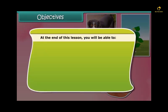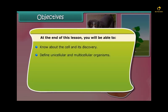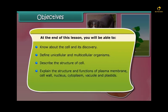Objectives: At the end of this lesson you'll be able to know about the cell and its discovery, define unicellular and multicellular organisms, describe the structure of cell, explain the structure and functions of cell membrane, cell wall, cytoplasm, nucleus, vacuole and plastids, and differentiate between the plant and animal cell.